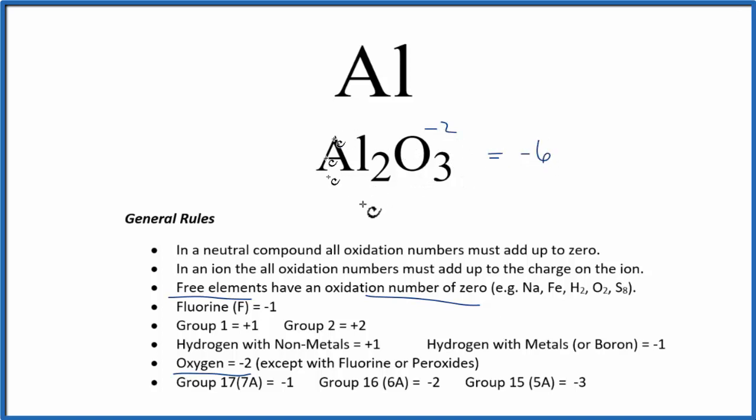For this to be a neutral compound with an overall charge of zero, this is going to have to be two times something that gives us plus six. Two times plus three gives us plus six. Plus six and minus six cancel out for a net charge of zero. So Al2O3 has aluminum with an oxidation number of plus three.